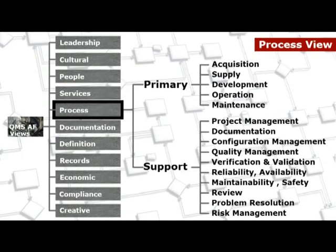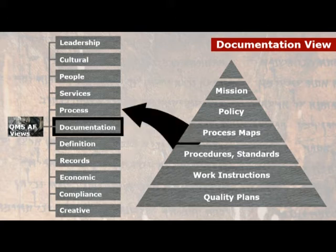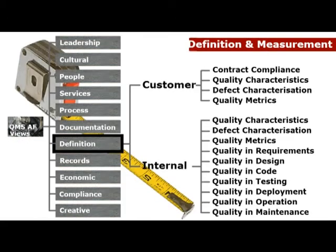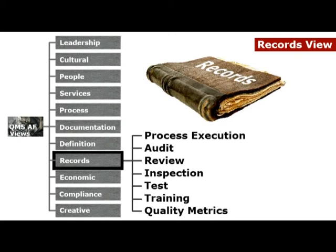The process view lists the business processes that impact quality and therefore need to be formally controlled. The documentation view identifies the documentation set that defines your quality management system and cross-references it to elements of the process view. The definition and measurement view explicitly describes what quality means in your business context and specifies how it is measured.